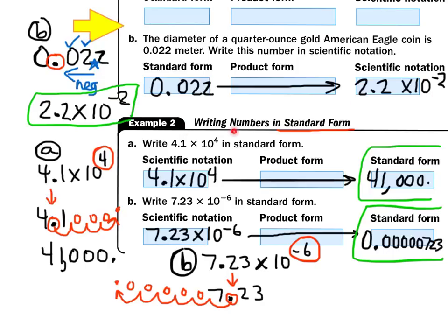Now let's look at example 2: writing numbers in standard form. My students always tell me this part is much easier. They'll give us a number in scientific notation like 4.1 times 10 to the 4th power and we have to write it the normal way. First, write out the number they gave you. Then drop the front number — the 4.1 — straight down. With your red, circle the exponent. That positive 4 tells you what to do with the decimal point.